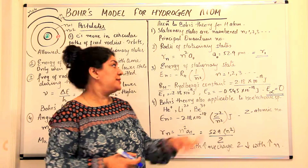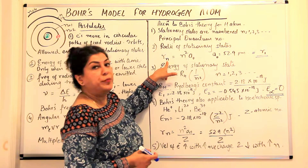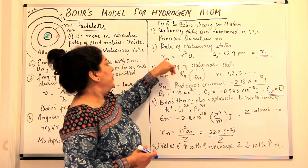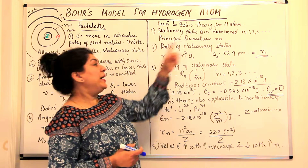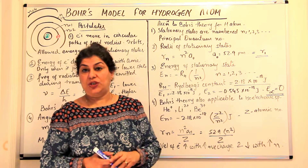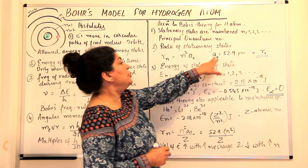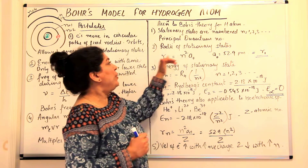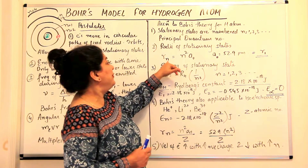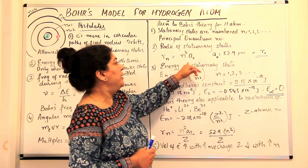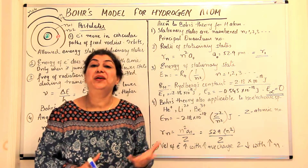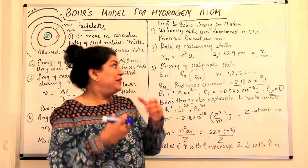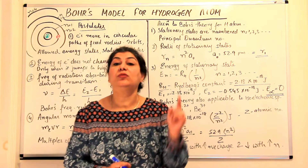Bohr gave a formula for the radius: rₙ, the radius of orbit n, is equal to n² times a₀, where n is the principal quantum number (1, 2, 3...). The value a₀ he calculated was equal to 52.9 picometers. This is the minimum radius. For the first orbit, n² = 1² = 1, so the radius equals a₀ = 52.9 picometers. In other words, in hydrogen the first orbit or first stationary state has a radius of 52.9 picometers around the nucleus.